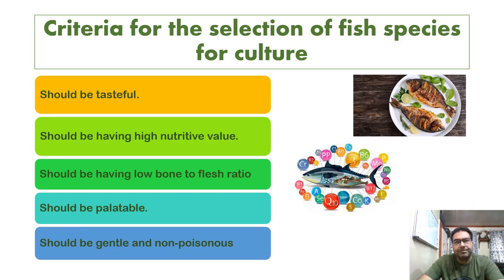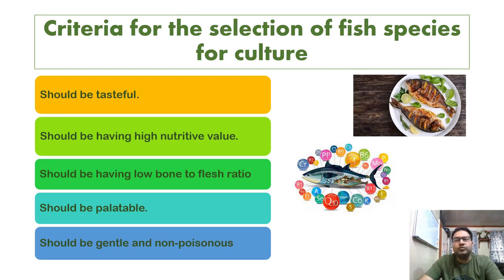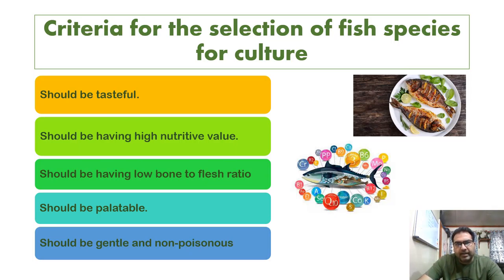The fish should have a very high nutrient value — good protein content, fatty acids, and a good lipid profile. So we should select a fish which has a high nutrient value and good nutrition. It should also have a low bone-to-flesh ratio, meaning less bone and more edible flesh.